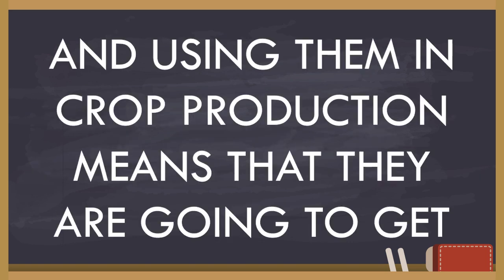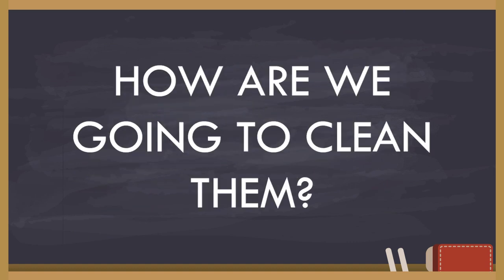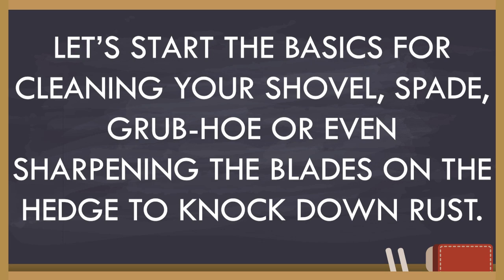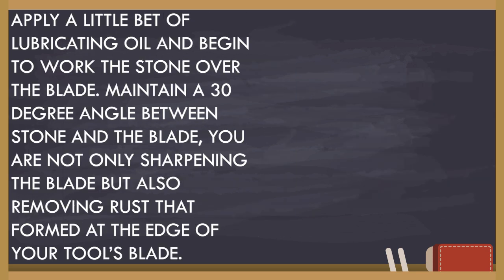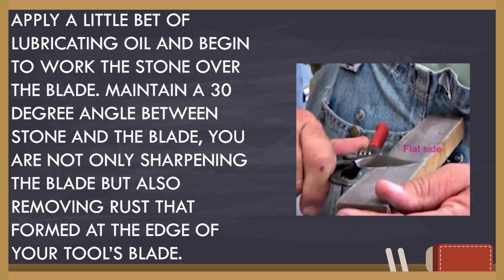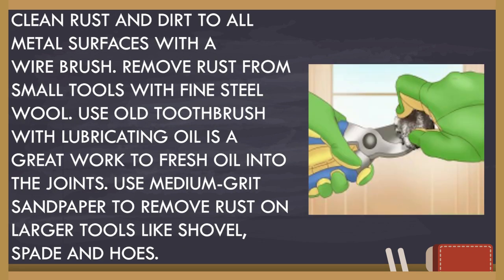Using tools in crop production means they are going to get dirty. Let's start with the basics for cleaning your shovel, spade, grub hoe, or even sharpening the blades to knock down rust. It's a good idea to keep a sharp blade to cut through soil better. Use a whetstone to keep all cutting tool edges honed. Try to stabilize the tool you want to work on — a bench vise is ideal. Clamp the tool into place at an angle, freeing both hands to use the stone. Apply a bit of lubricating oil and begin working the stone over the blade, maintaining a 30-degree angle between the stone and the blade. You're not only sharpening the blade but also removing rust that forms at the edge.